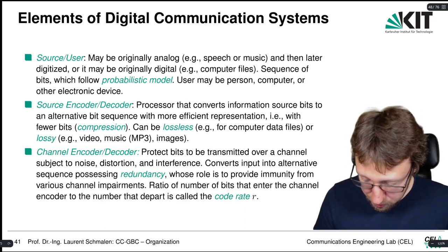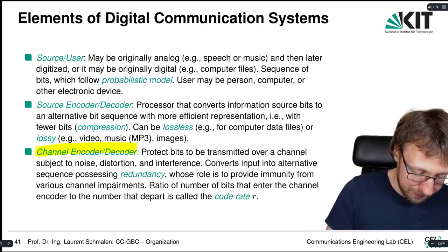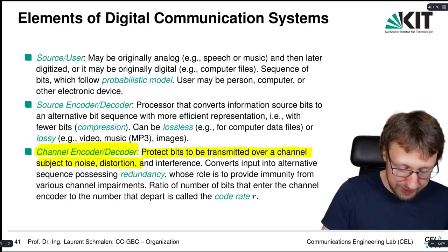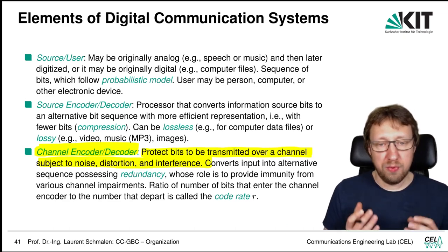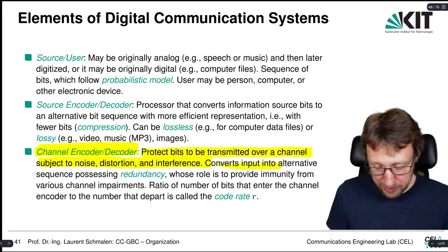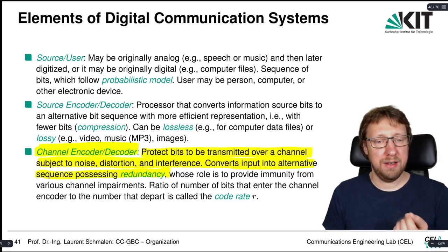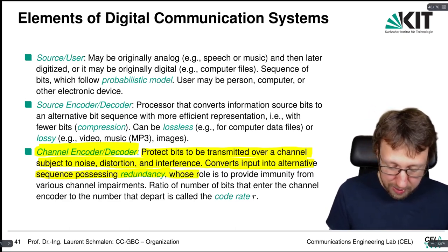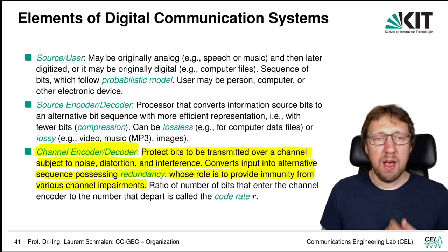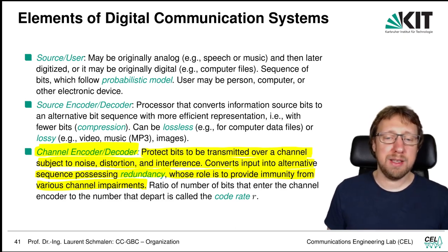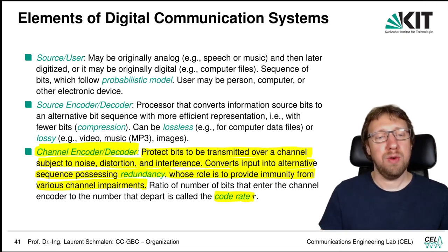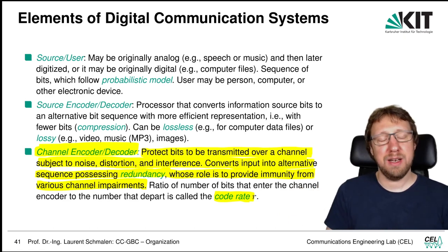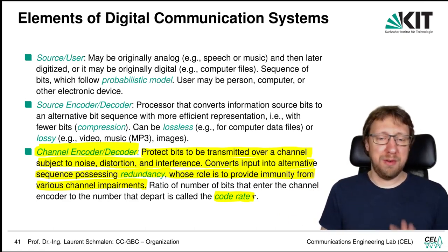The channel coder has both encoders and decoders. The role of the channel encoder and decoder is to protect the bits transmitted — which are subject to noise, distortion, and interference. To carry out this protection, we convert the input bits into an alternative sequence that is redundant. This redundancy provides immunity from channel impairments. The channel encoder and decoder is characterized by the code rate, which tells us how much redundancy we add — the ratio of input bits to output bits.